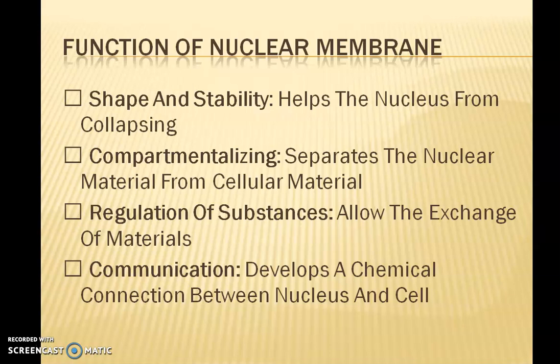Likewise, other substances like tRNAs, which are also needed for translation, and the ribosomal subunits which are synthesized in the nucleolus — as we have discussed in previous videos — also have to be transported to the cytoplasm. All these transport processes occur through the nuclear pores.